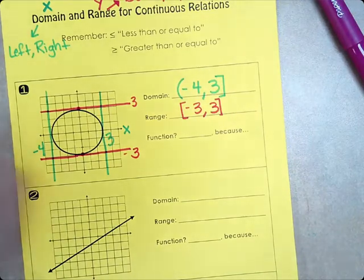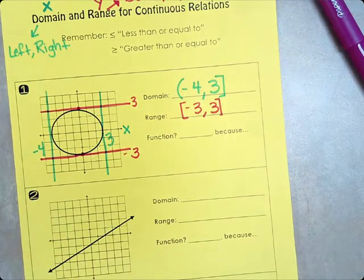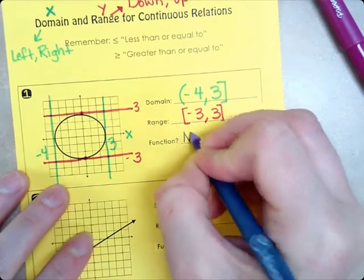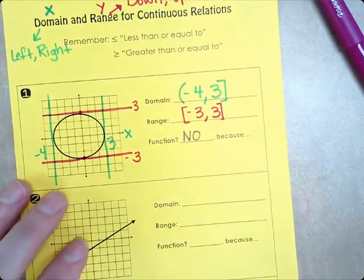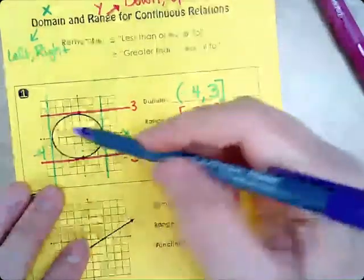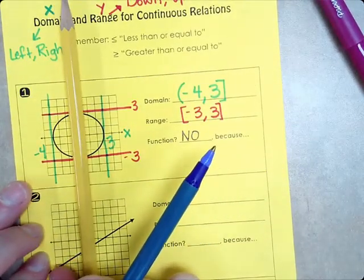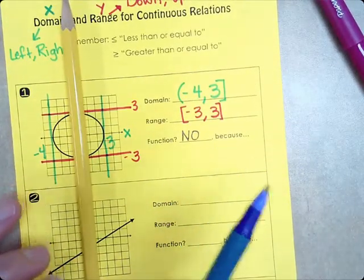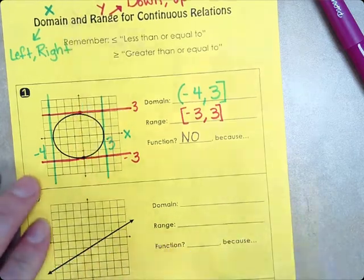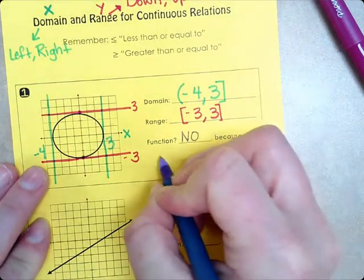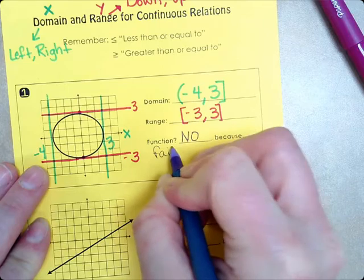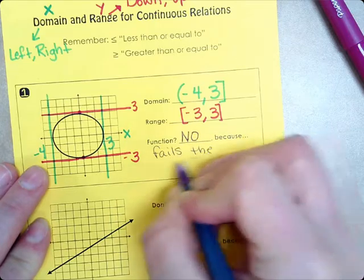Is this a function? No. X is repeat. And also, if we did our pencil test, the vertical line test, this function, the circle, it touches the pencil twice in one vertical line. I'm going to put fails the vertical line test.